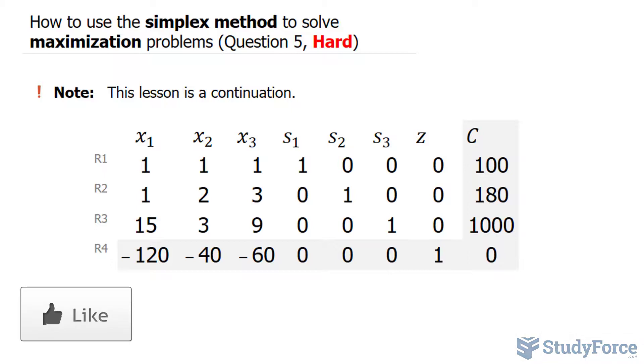Now to begin solving this matrix, you start by locating the most negative number in the last row, which is always dedicated to your objective function. The most negative number is negative 120, and this column now is important. It's called the pivot column.